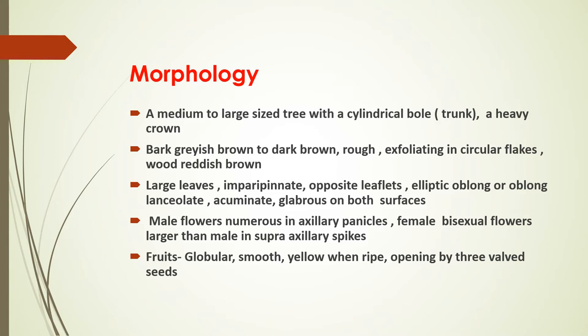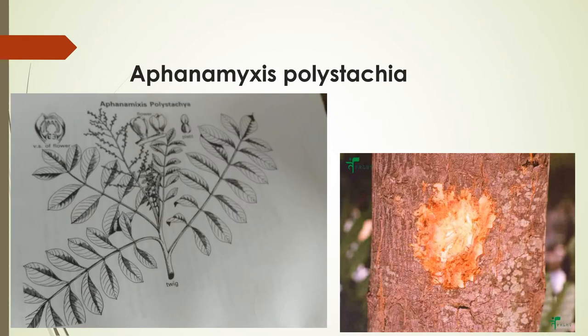Male flowers are numerous in axillary panicles, while female and bisexual flowers are larger than the male, in supra-axillary spikes. The fruits are globular, smooth, yellow when ripe, and opening by three-walled seeds — this is a speciality of the seeds.